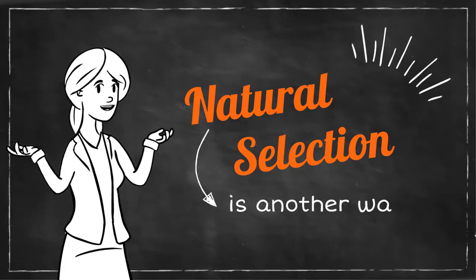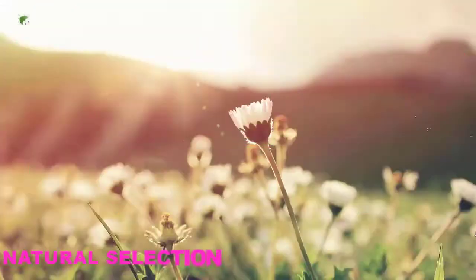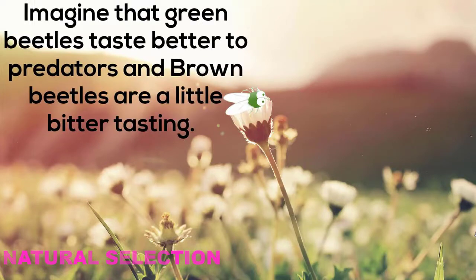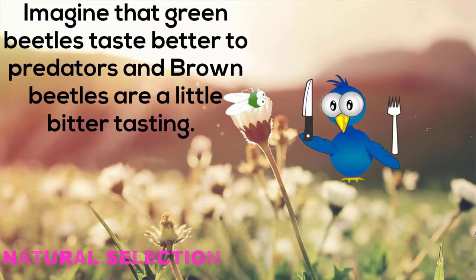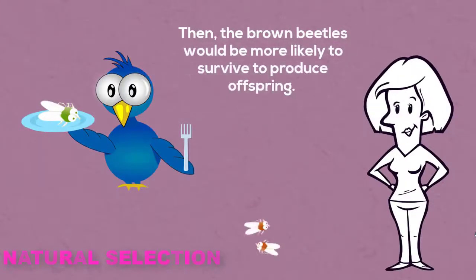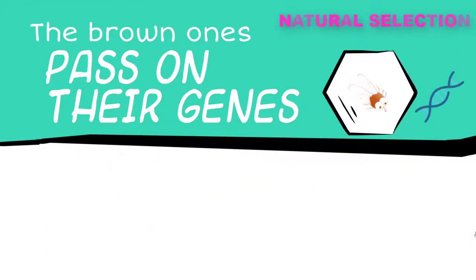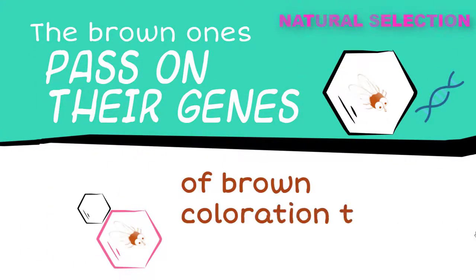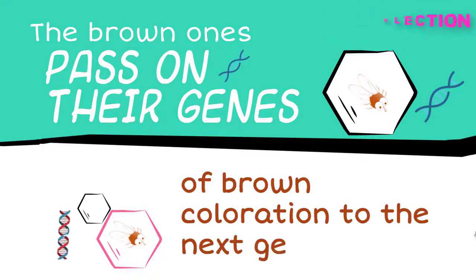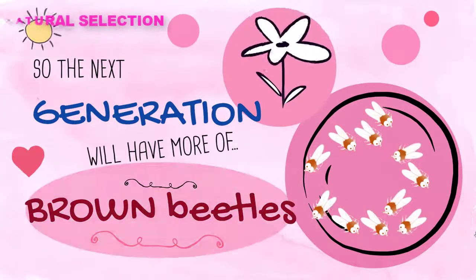Another way we could get this change is natural selection. Imagine that green beetles taste better to predators, and brown beetles are a little bitter tasting. Then the brown beetles would be more likely to survive to produce offspring. The brown ones pass on their genes for brown coloration to the next generation, so the next generation will have more brown beetles.